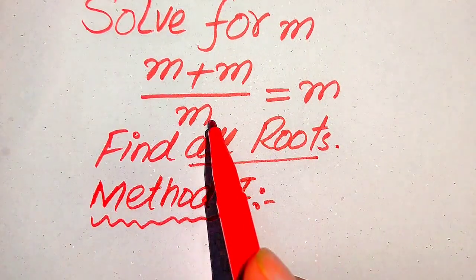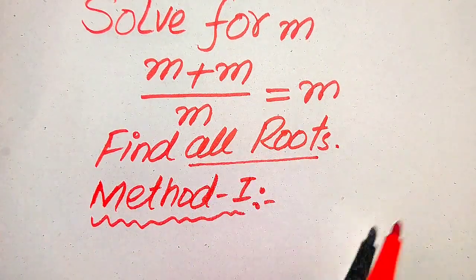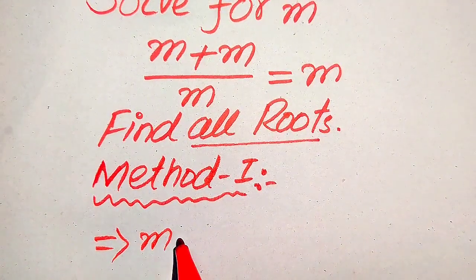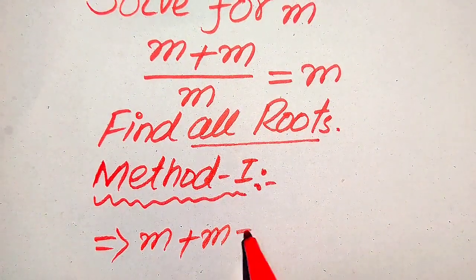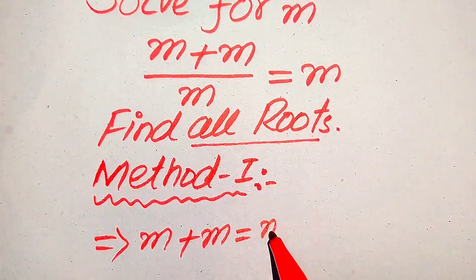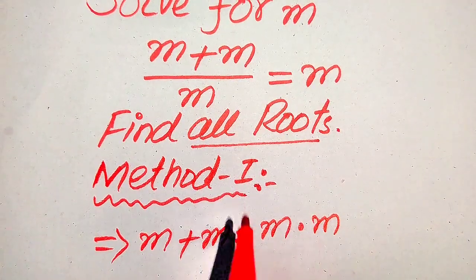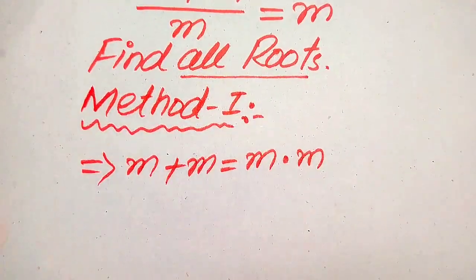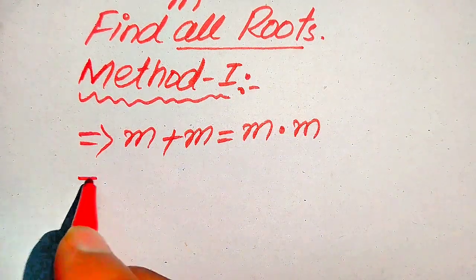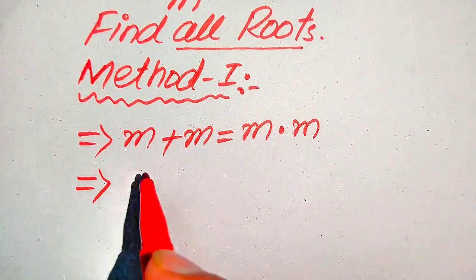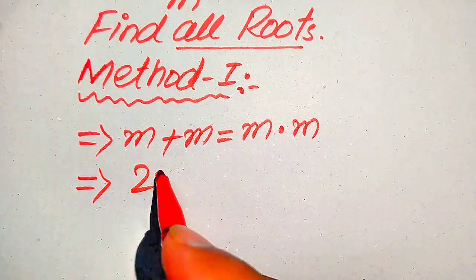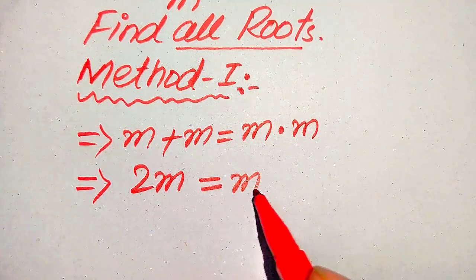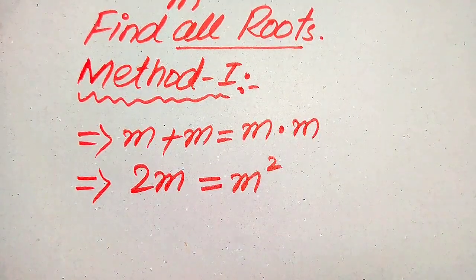In the first method, we move this m to the right-hand side, so it will be written as m plus m equals m multiplied by m. This is because when we move the division to the right-hand side it becomes multiplication. Now, m plus m equals 2m, and m multiplied by m equals m squared.